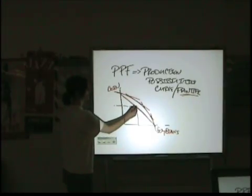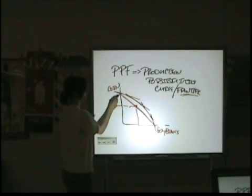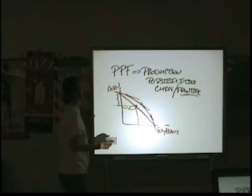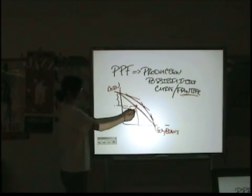What are we giving up? Well, if you're talking about the difference between the intercept, where we are producing only one product, and a point somewhere on the curve, then we have just given up this much corn to produce this many soybeans. That's what it means as we move along the curve.